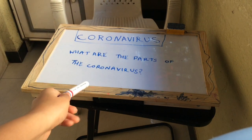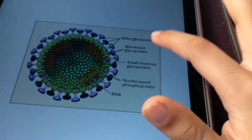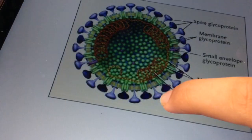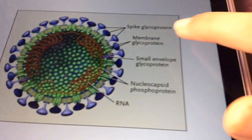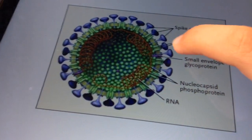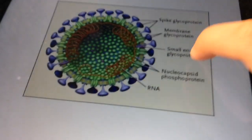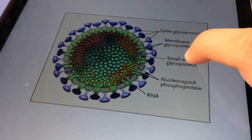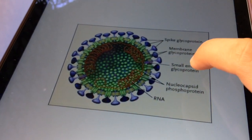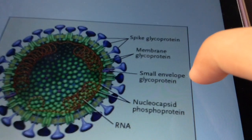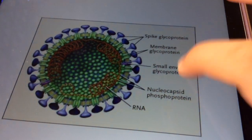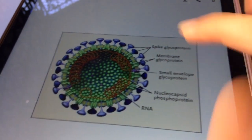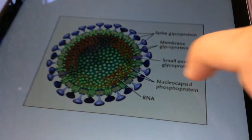The next question: what are the parts of the coronavirus? The virus has the spike glycoprotein — also known as the spike protein — the blue parts; the membrane glycoproteins which hold the spike glycoproteins; and the small envelope glycoproteins, also known as lipid envelopes. That is the reason you should wash your hands with soap for 20 seconds — the soap will dissolve the fats in the small envelope glycoproteins, which will weaken the virus.